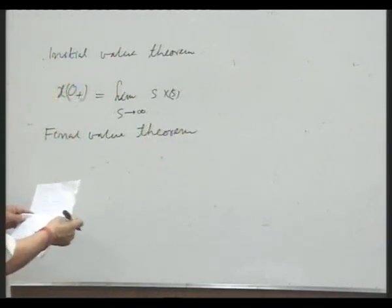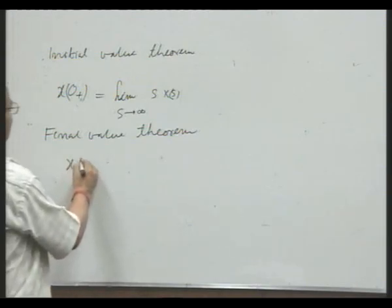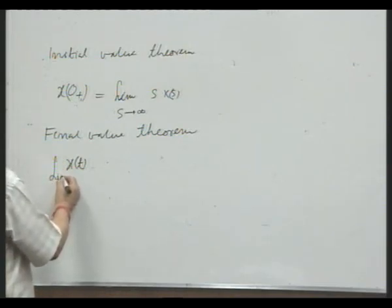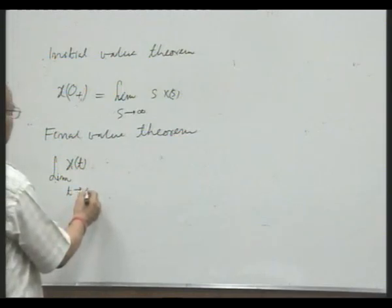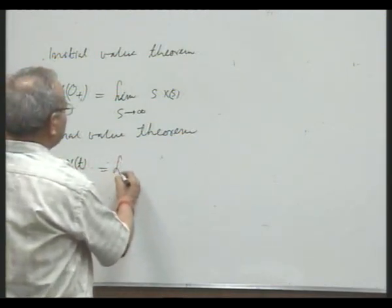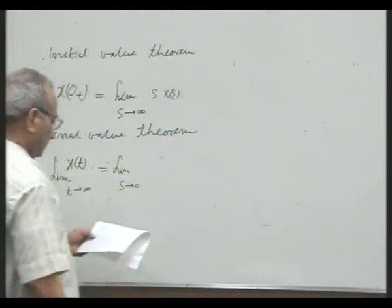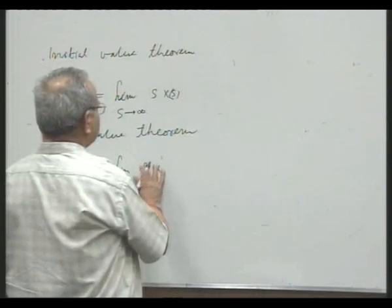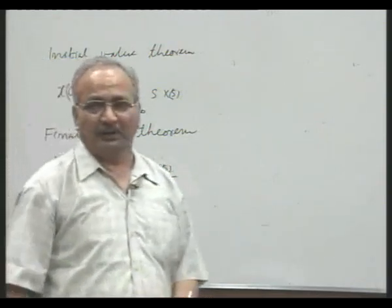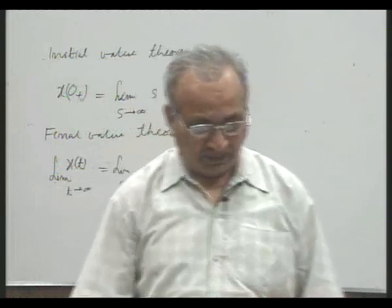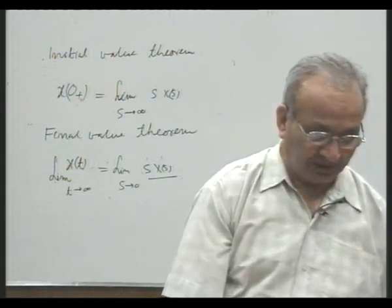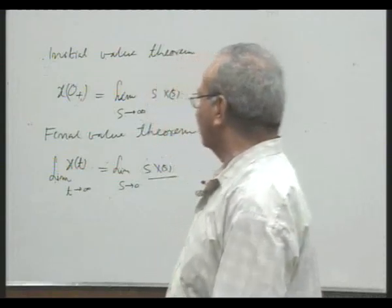Like that, you have the final value theorem, which states that the final value of the signal x(t) — that is the steady-state value as t tends to infinity — must equal the limit as s tends to zero of s·X(s). These are the two useful theorems to find the initial and final values of a signal. With this, I take Laplace transform as complete. If time permits, we will do some more problems on it.